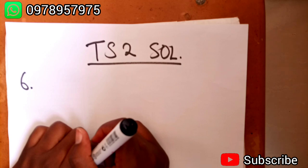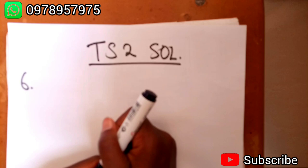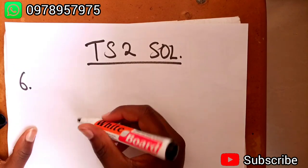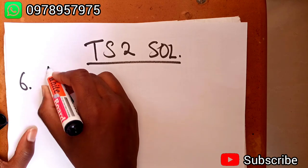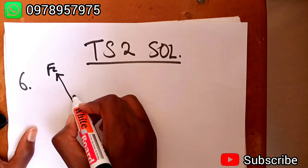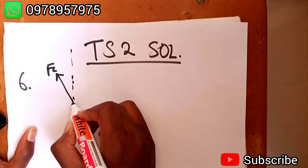And part b, the force a third person would have to exert on the mule to make the net force equal to zero. The forces are measured in units of newtons. Part a is just telling us to find the resultant force. We have our F2 and we have got our axis there.